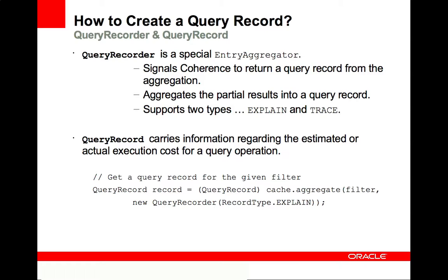As mentioned on the previous slide, the query explain plan feature uses a query recorder, which is a special aggregator passed into the invocable map aggregate. The query recorder serves two purposes. One, it signals Coherence to build and return a query record for a query based on the passed-in filter. And two, it aggregates the partial query record results returned from Coherence members. The query recorder can be constructed to produce either an explain plan or query trace.